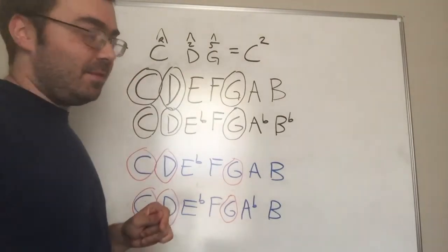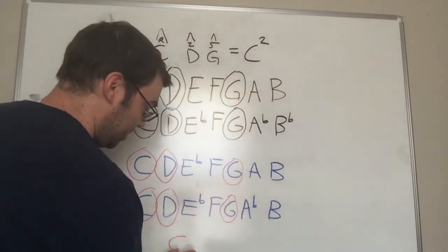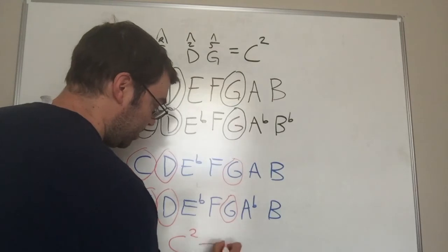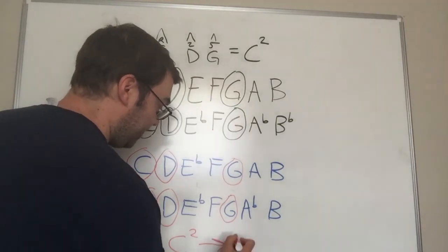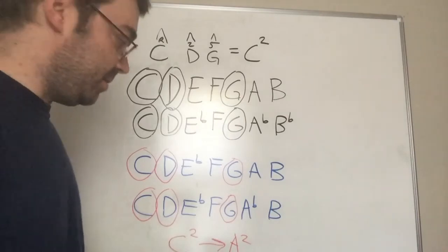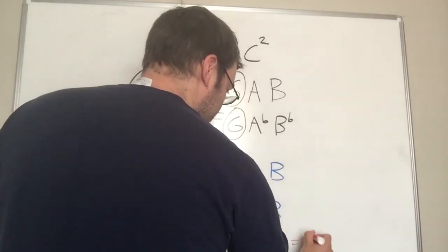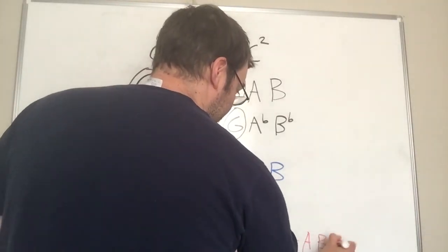And what if you have a progression of, say, C two to, say, A two. Now A two equals A, B, and E.